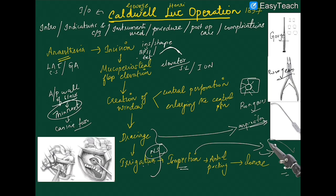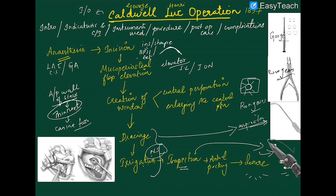Once the antrum is clear, inspect for any inflammatory lining epithelium or granulomatous tissue on the antral wall. Use a curette to remove all inflammatory granulation tissue adhered to the antral wall. After all debris is removed, take a strip of gauze dipped in antibiotic paste and fill the antrum. Then close by repositioning the mucoperiosteal flap and suturing with interrupted sutures. The gauze strip is removed after two days, and the antrum heals completely within about one week.